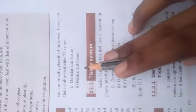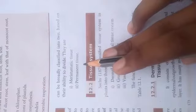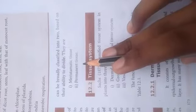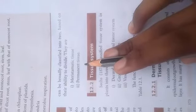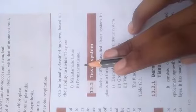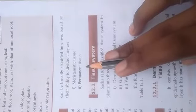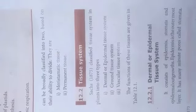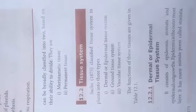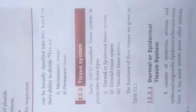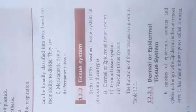Permanent tissue is found in plant parts such as leaf, branch, root, and stem — these are all differentiated tissues. In our next video, we will continue with what is a tissue system. Thank you.